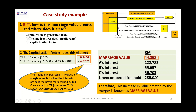Based on the calculations from the previous slides, with the different interests held by A, B, and C, and the unencumbered freehold value of $280,000, we can work out the value of the merger. The extra value created by the merger is known as marriage value. Marriage value is only created by the merging — if there is no merging, there is no marriage value. It can only be released by merging all the multiple interests within the property.